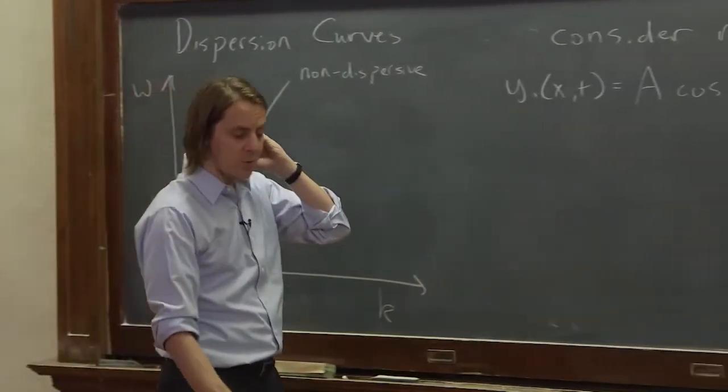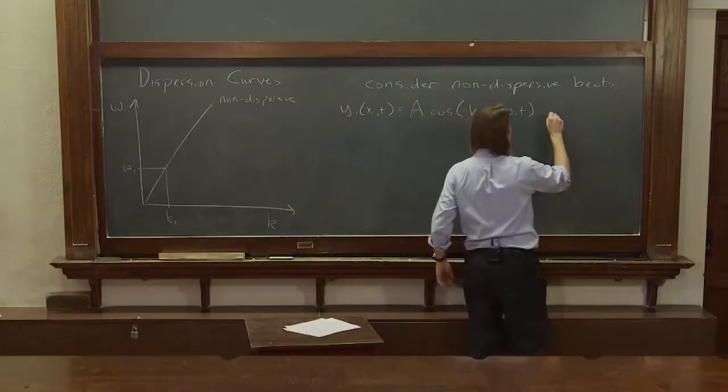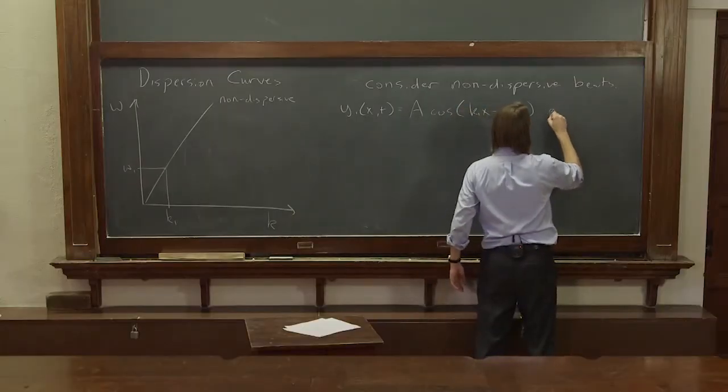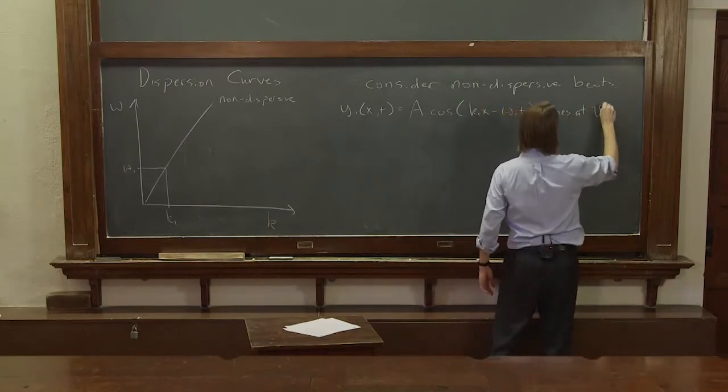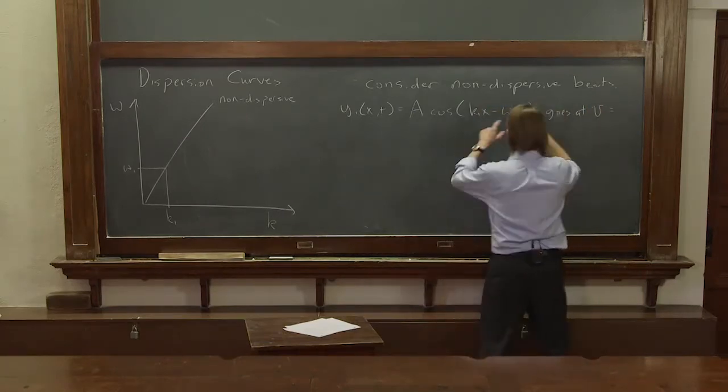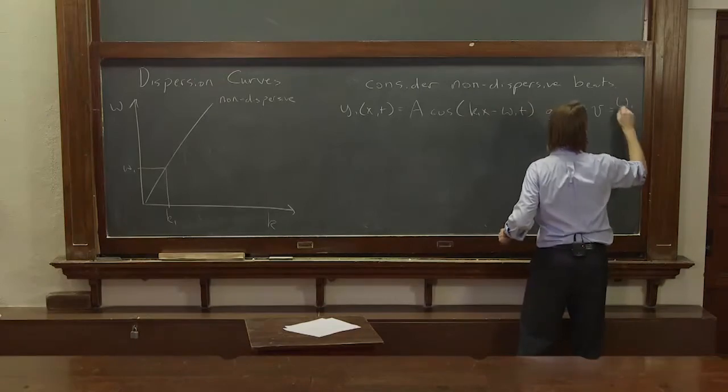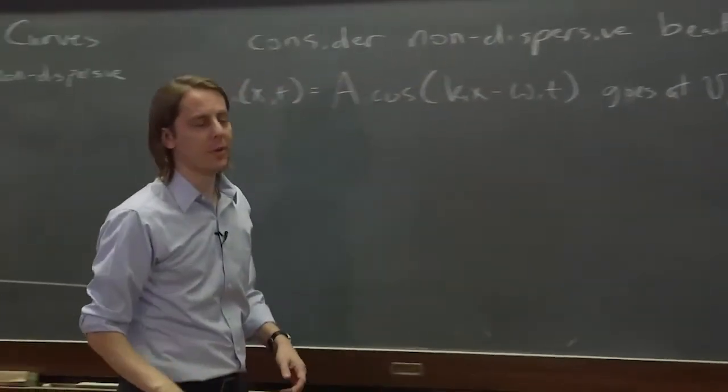Okay, that sinusoid will travel at, I'll say, goes at v is what? ω₁ over k₁. I'll call that v₁.